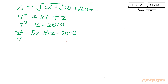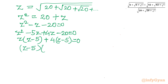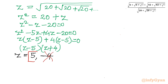Taking z common from the first two terms gives z minus 5, and taking 4 common from the last two terms also gives z minus 5. So the factorization is (z minus 5)(z plus 4) equals 0, giving z equals 5 or z equals negative 4. The negative value is rejected, so z equals 5 is accepted.